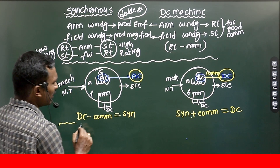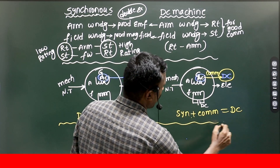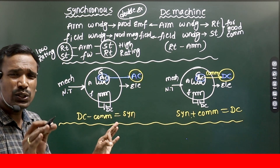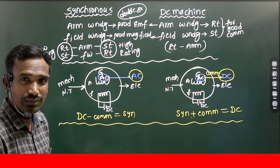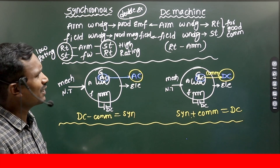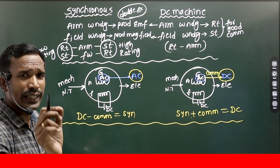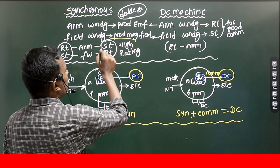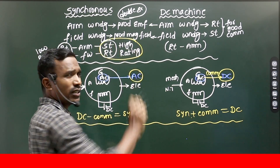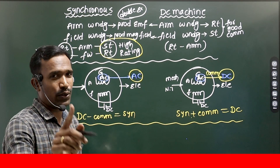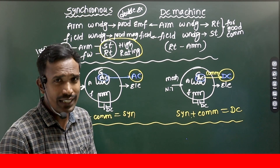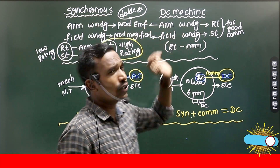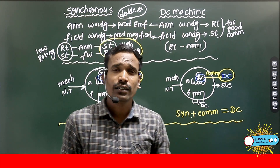These are the two major differences between synchronous machine and DC machine. The advantages of stationary armature will be discussed in the next video. So here I discussed the differences between synchronous machine and DC machine.